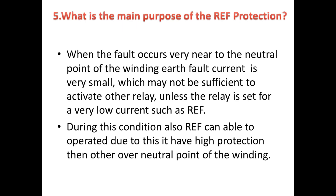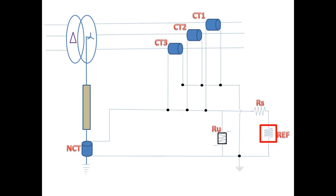Fifth question: what is the main purpose of REF protection? When the fault occurs very near to the neutral point of the winding, the earth fault current is very very small, which is not sufficient to activate other protection unless the relay setting is set at a very low value. During this condition, REF is able to perform very well over other protection near the neutral point of the winding.